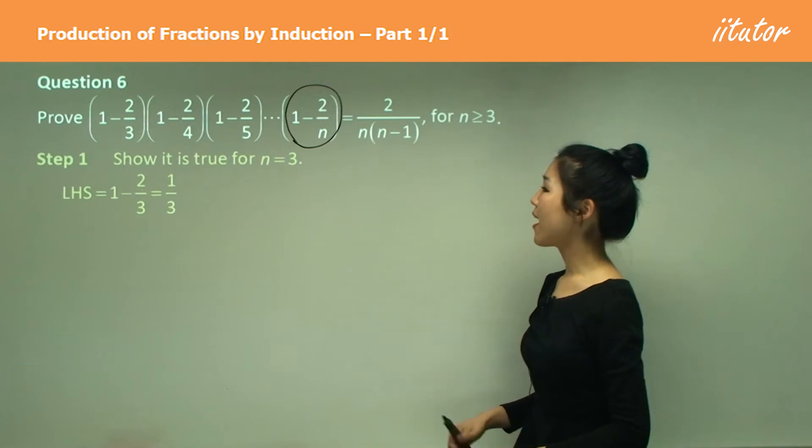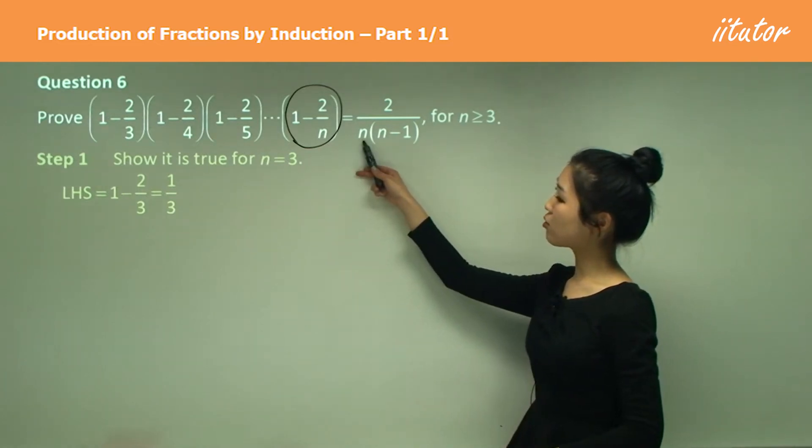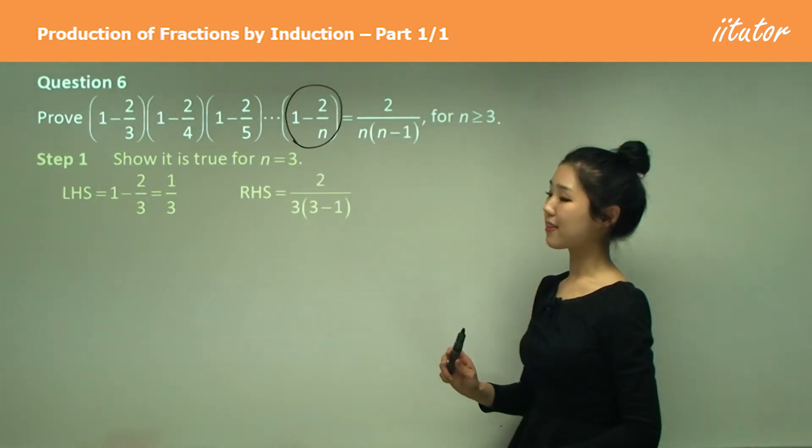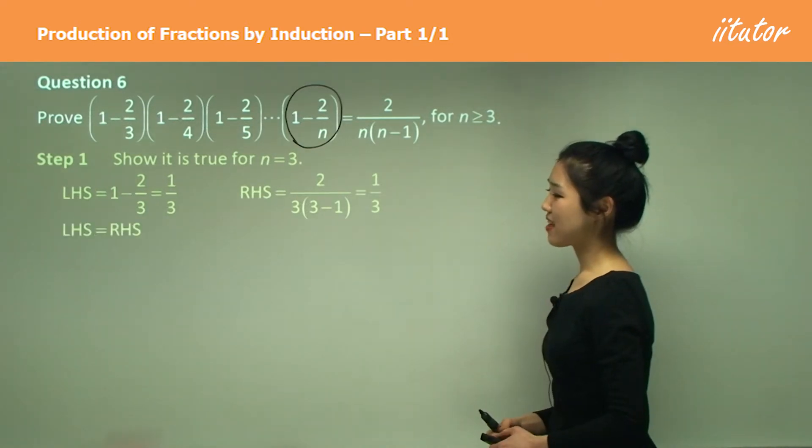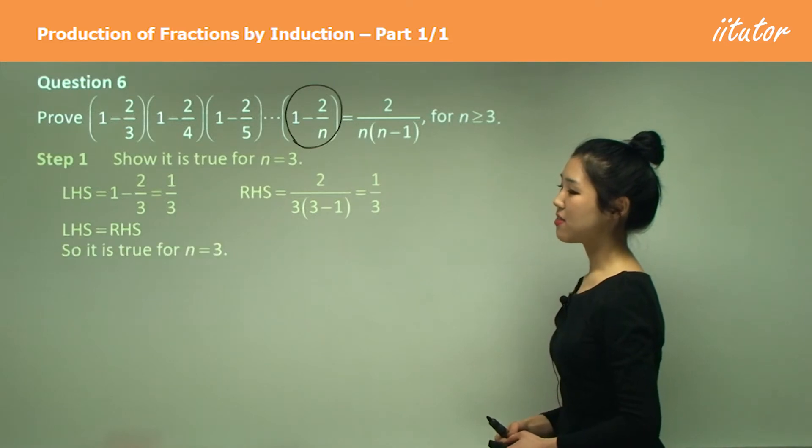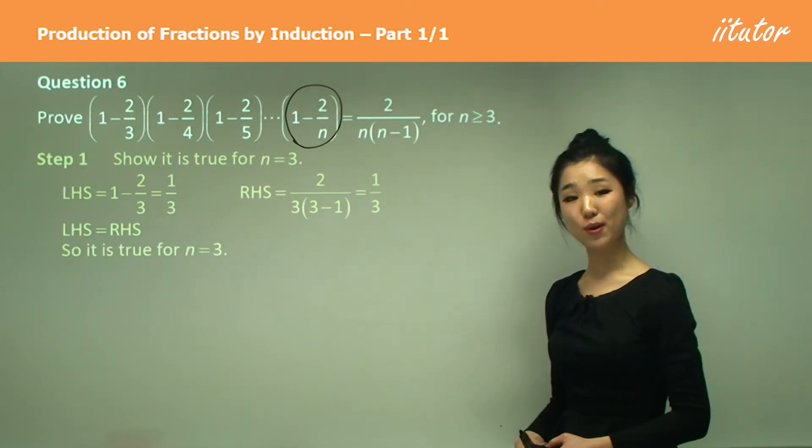Now for our right hand side, you should substitute n equals 3 into here, like that. And that would simplify to 1 on 3 as well. So now you can see that left hand side is right hand side, therefore it is true for n equals 3.